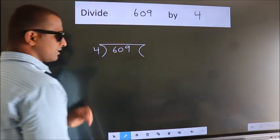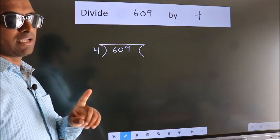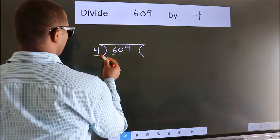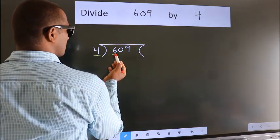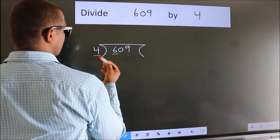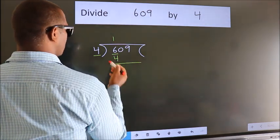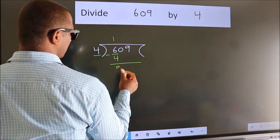This is your step 1. Next, here we have 6, here 4. A number close to 6 in the 4 table is 4 once, which is 4. Now we should subtract. We get 2.